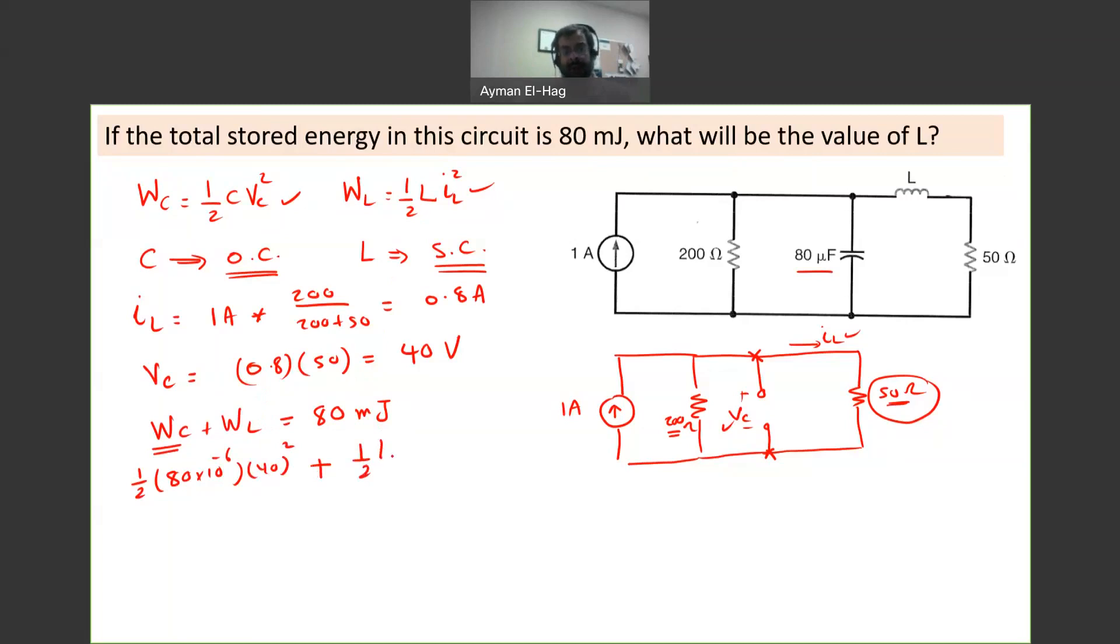This is L, our unknown, and the current is equal to 0.8 squared. Now the summation of these two is equal to 80 times 10 to the minus 3. Again, make everything in joules, so now all the units are matching.